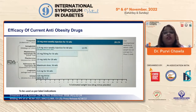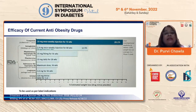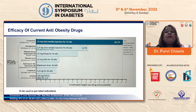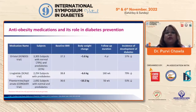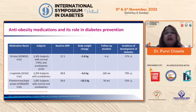Among anti-obesity drugs, tirzepatide is really exciting — approved for diabetes and one of the first molecules to show up to 20 percent weight loss in trials and clinic, comparable to sleeve gastrectomy results. Adverse events exist, but a patient dealing with obesity and diabetes can learn to manage them with physician guidance. Anti-obesity medications for diabetes prevention are also being studied, with significant reductions in incidence seen with orlistat, liraglutide, and phentermine-topiramate combinations.